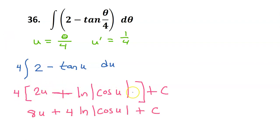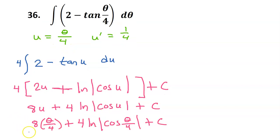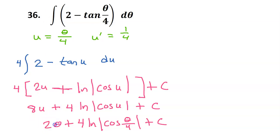Of course this minus a negative is going to just be a positive. Distributing the 4 across, and now let's put the theta over 4 back in for u. Notice that 4 divides evenly into 8, so if I go ahead and do that I end up with 2 theta. And this is the exact same thing that I got the last time.